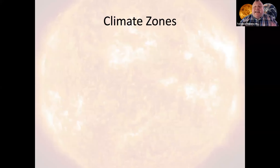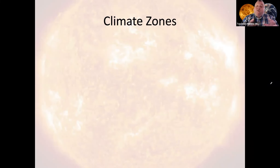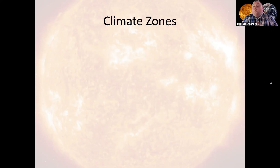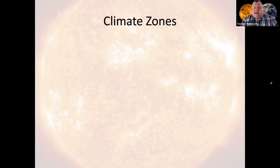The last thing I want to talk about in this module, now that we've gone over the greenhouse effect and overviewed seasons, is the results of the differences between length of day, incoming sunlight, and how that all affects seasons — to split Earth up into three main climate zones.